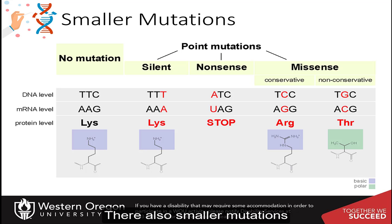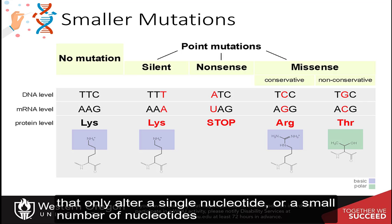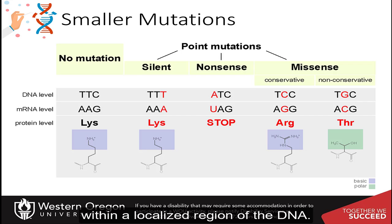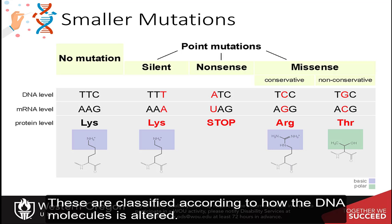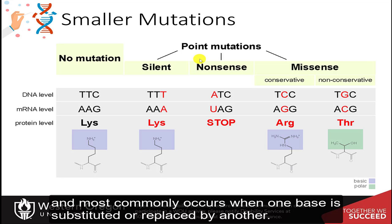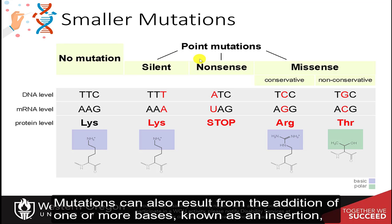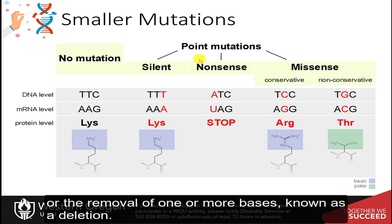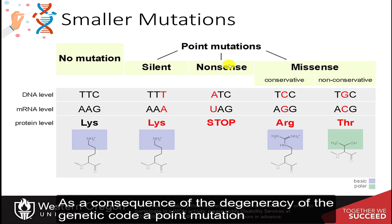There are also smaller mutations that only alter a single nucleotide or a small number of nucleotides within a localized region of the DNA. These are classified according to how the DNA molecule is altered. One type, a point mutation, affects a single base, and most commonly occurs when one base is substituted or replaced by another. Mutations can also result from the addition of one or more bases, known as an insertion, or the removal of one or more bases, known as a deletion.